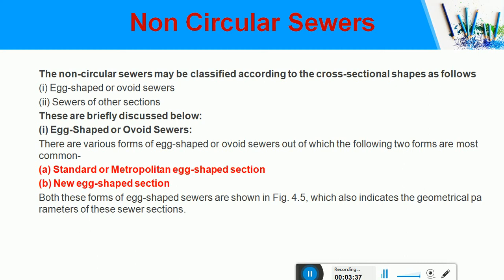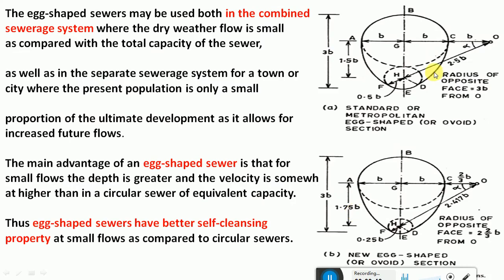There are two types: the standard metropolitan egg-shaped section and the new egg-shaped section. In the standard egg shape, the upper portion has a larger diameter and the lower section is smaller. For the new egg shape, modifications include a ratio of 2.417 times the breadth from the central axis, a diameter of 2.5 times b, and the lower dimension is 0.5 times b.